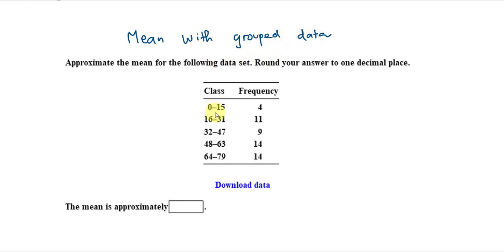For example, we are given a few classes here and the frequency for each class. Now, how do I approximate the mean for all of the classes here?